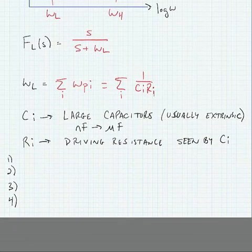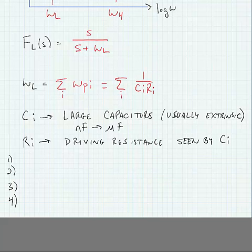Now, what are CI and RI? CI are the large capacitors in the circuit. These are typically extrinsic capacitors that we add for things like decoupling and bypassing. They're going to have values in the nanofarad to microfarad range. RIs are the driving resistances seen by each of those individual CI capacitors.